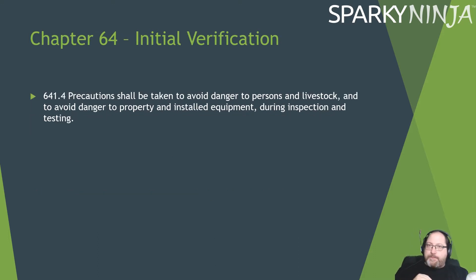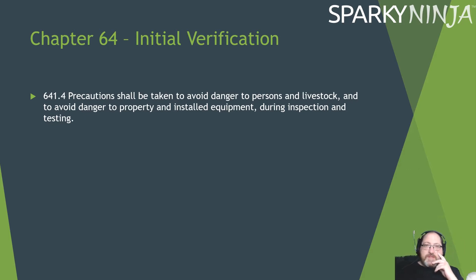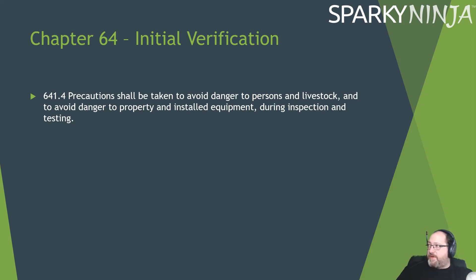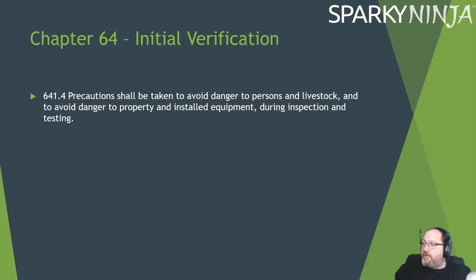We've got a little adjustment to 641.4. It says precautions shall be taken to avoid danger to persons and livestock, and to avoid danger to property and installed equipment during inspection and testing. What's different there? Well, the fact is it says you will take precautions to prevent danger. So if you actually look in the old regulation, it did say something different.